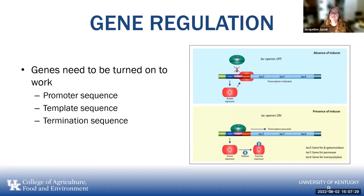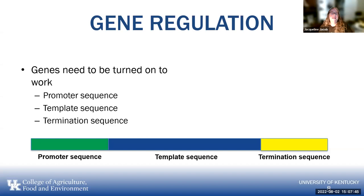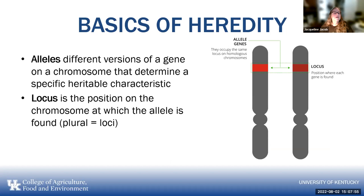In addition to the function of genes to make proteins, they also have to be regulated. Part of a gene is the promoter sequence which turns the gene on, the template sequence which creates the protein, and the termination sequence which tells it to turn off. The transcript is blocked unless RNA polymerase is present to allow transcription to occur. Alleles are different versions of a gene at a specific location on a chromosome that determine a specific characteristic.